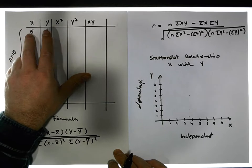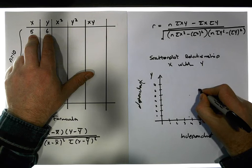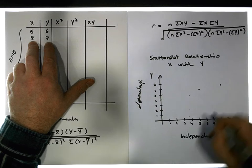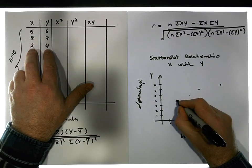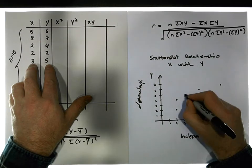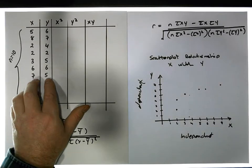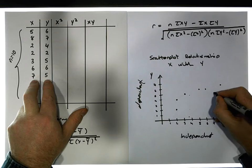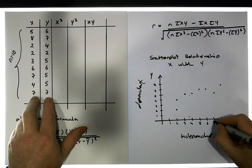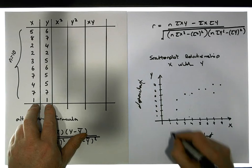I'm going to fill in points in space, just like x-y coordinates. At five, six: here's five, go up to six — a point in space. At eight, seven: a point in space. At two, four: a point in space. At two, two: a point in space. At three, five: a point in space. Six, six is around here. Seven, five is around here. Four, five gives a value around here. Seven, seven is around here. And finally one, one gives us a value here.